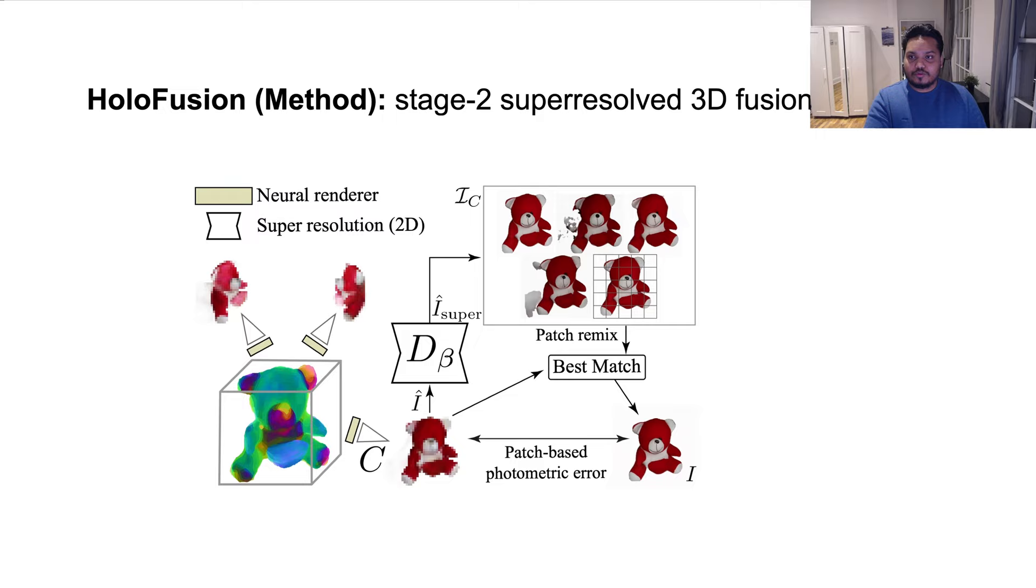Thus, to overcome these issues, we propose a patch remix technique. In this technique, we obtain as few as k equals 5 super resolution hypotheses for each low resolution rendered views and optimize the loss only for the best matched one on a patch level.